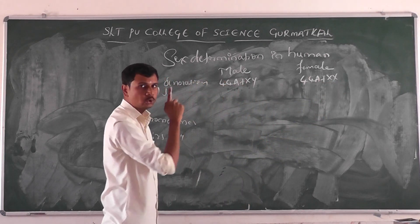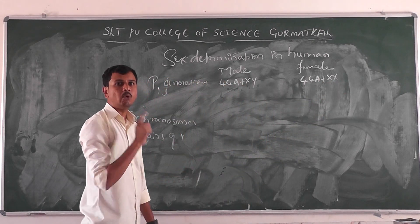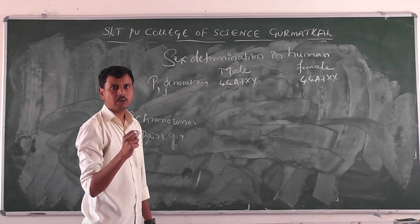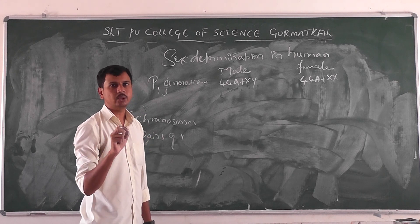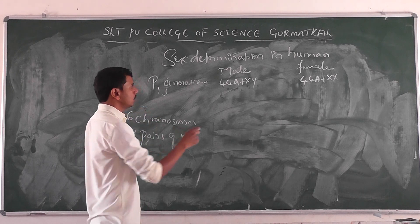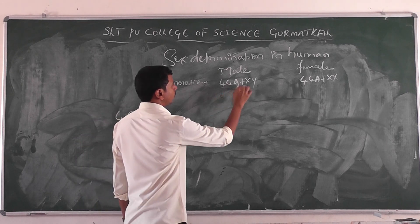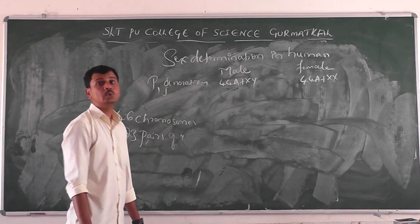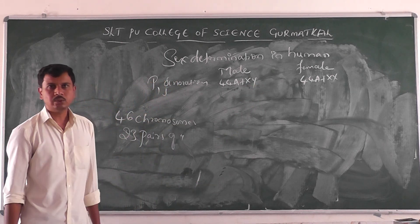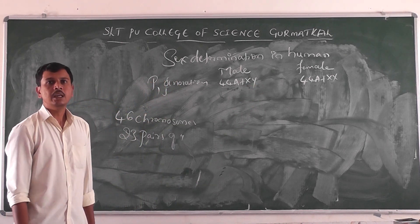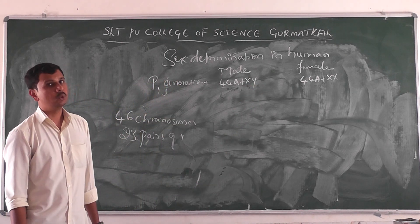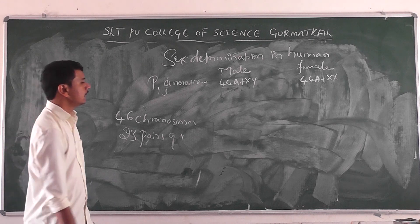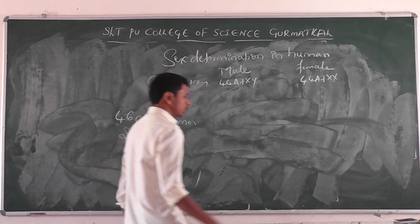The 44 chromosomes are the autosomes — what we call body cell chromosomes. The remaining 2 are the allosomes, otherwise also called sex chromosomes.